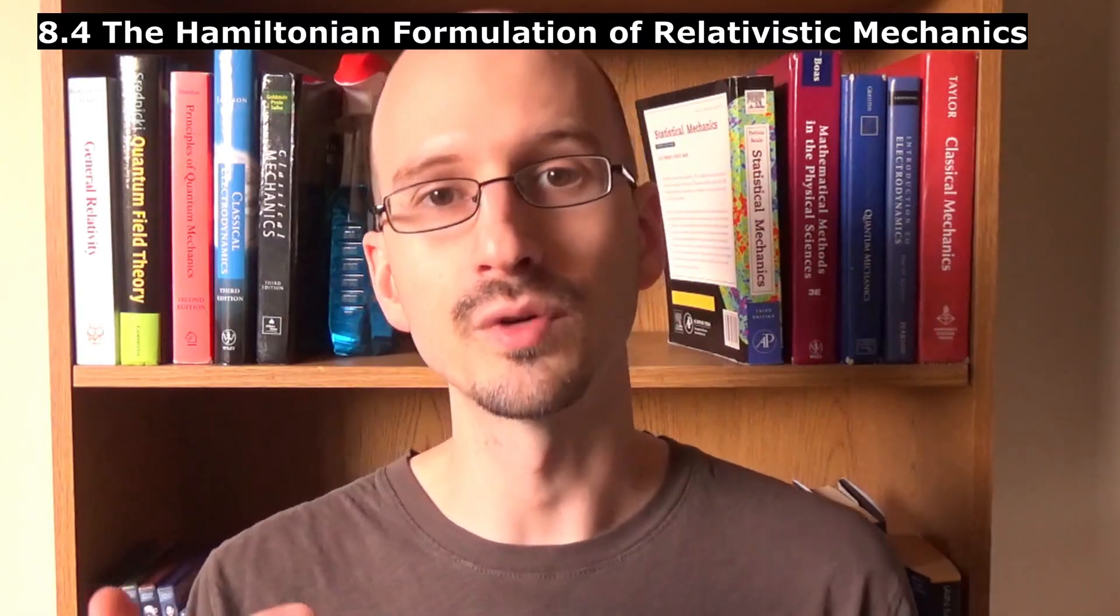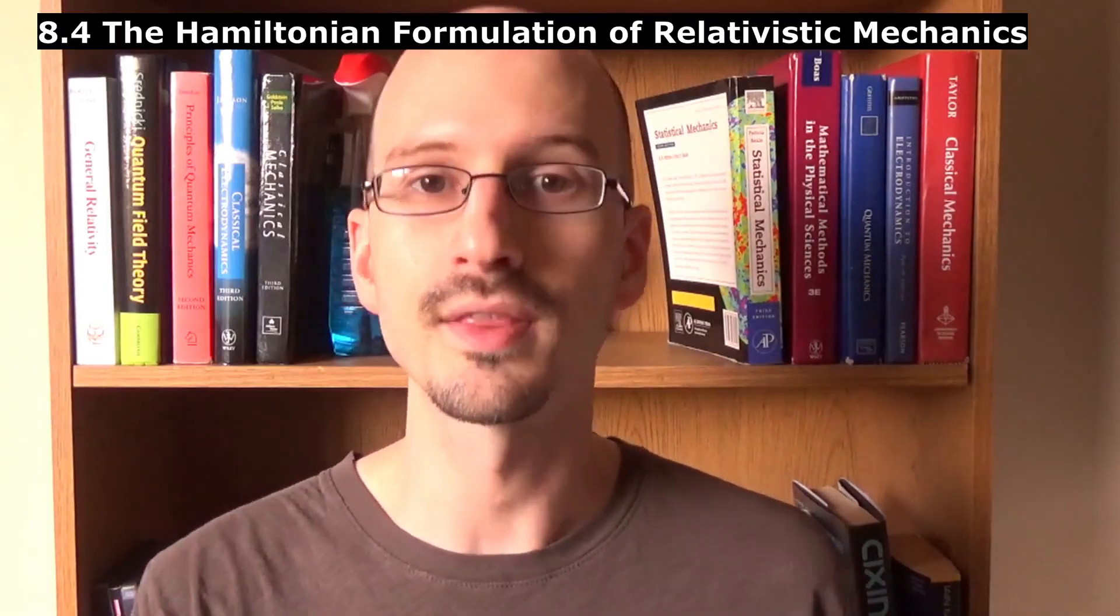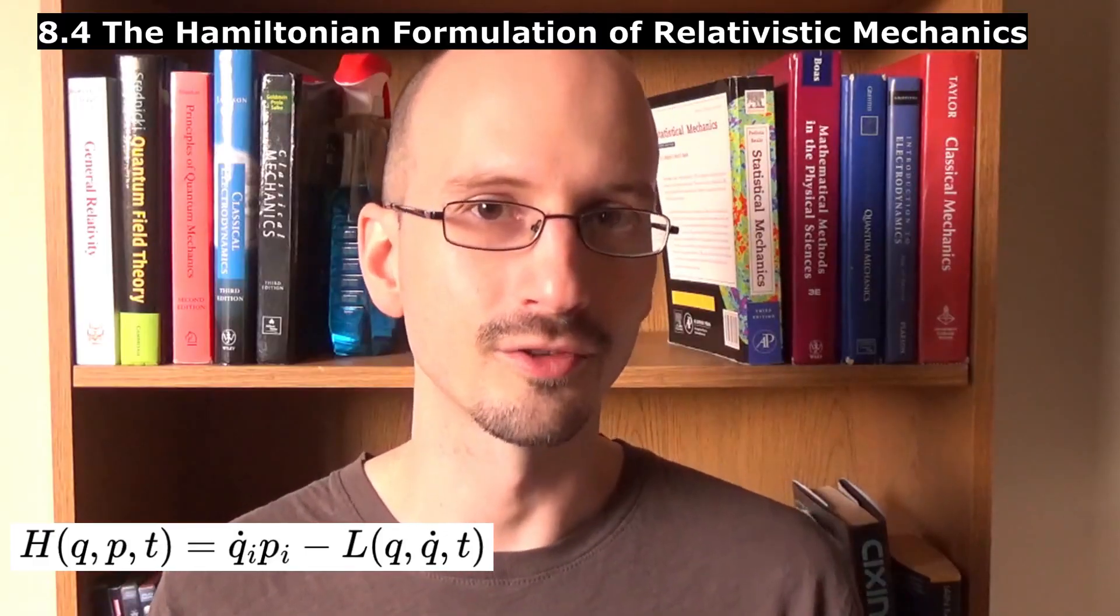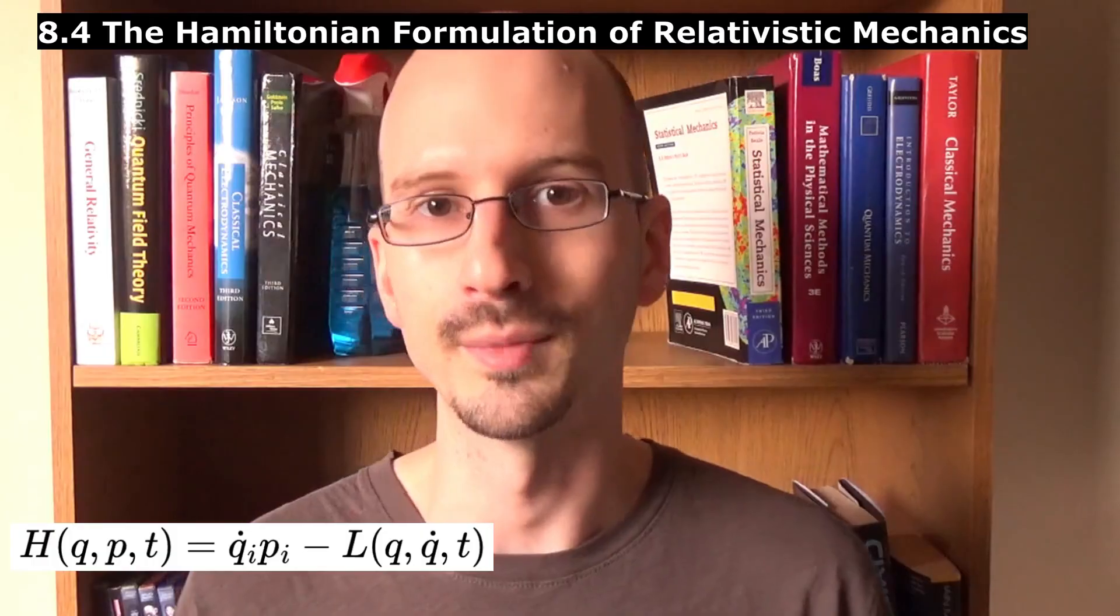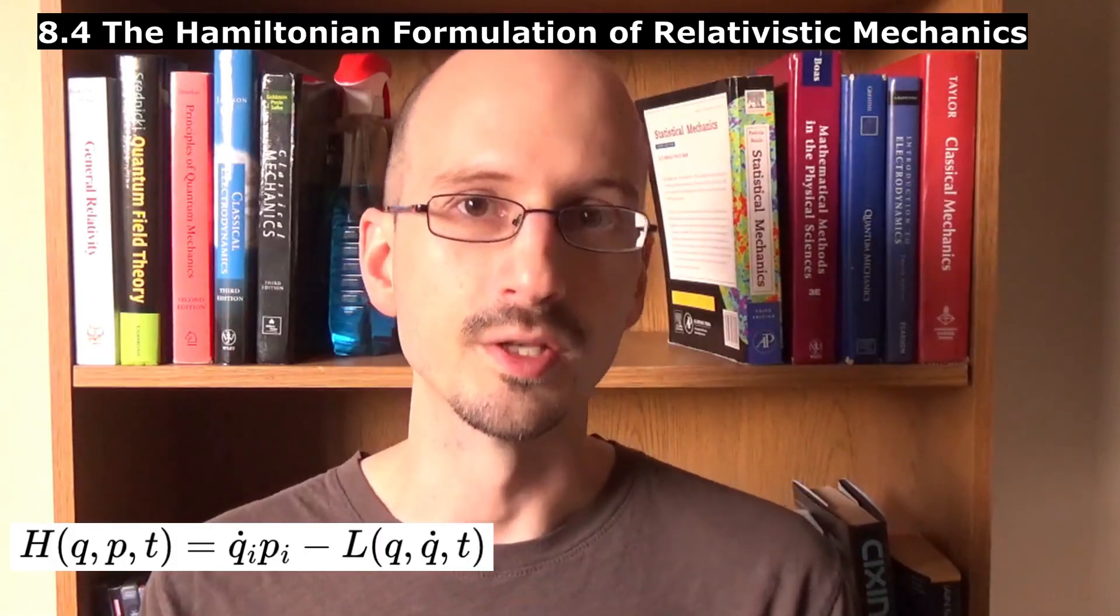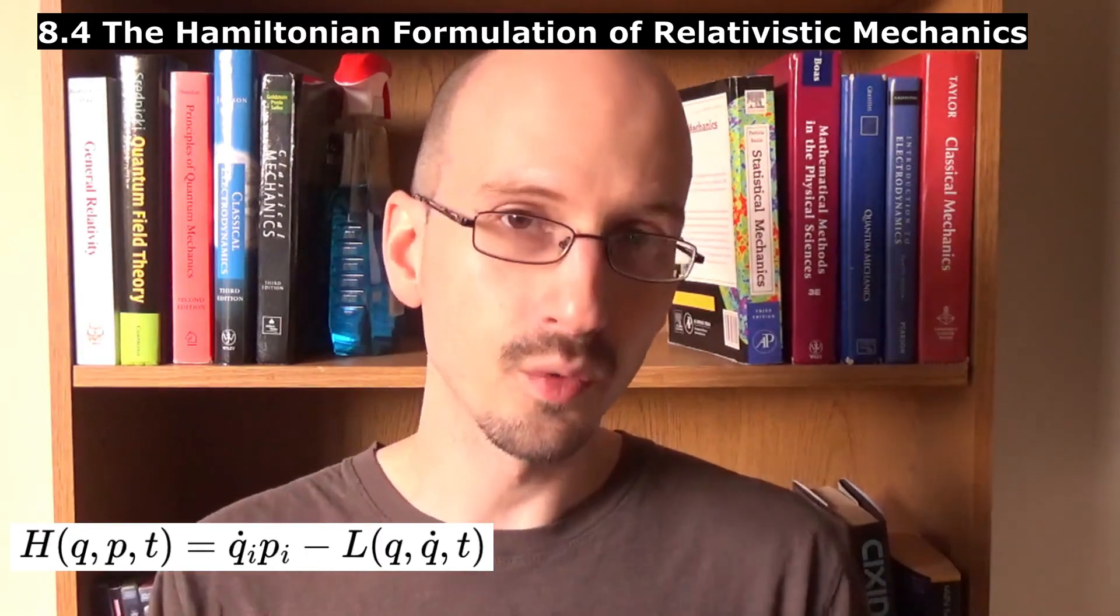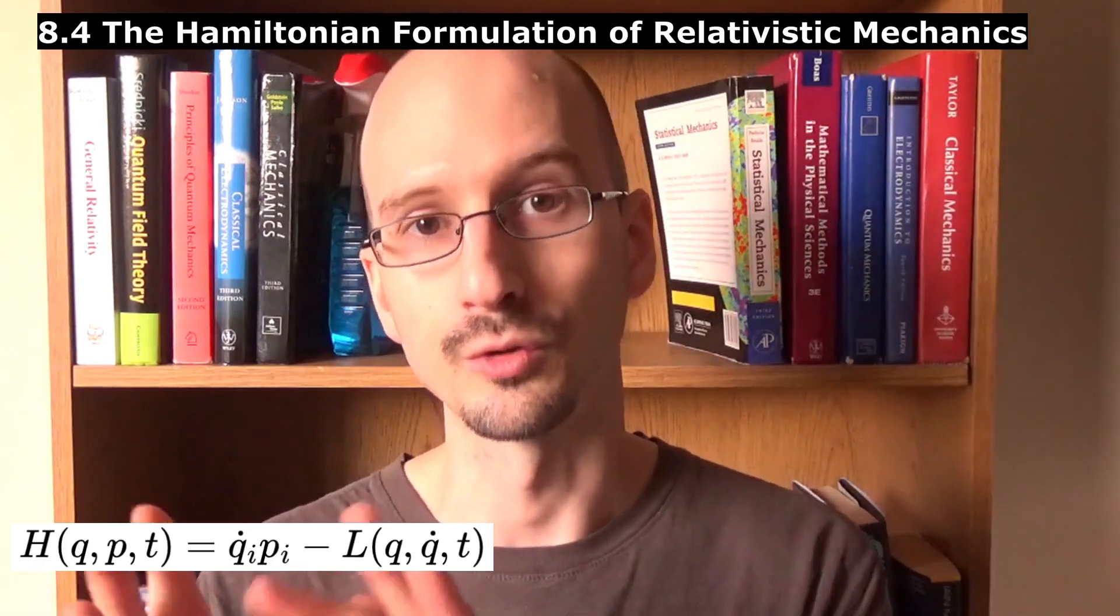The Hamiltonian can be found relativistically by the same two methods as the Lagrangian. The first method is to choose a reference frame and use a three-dimensional Lagrangian or Hamiltonian.